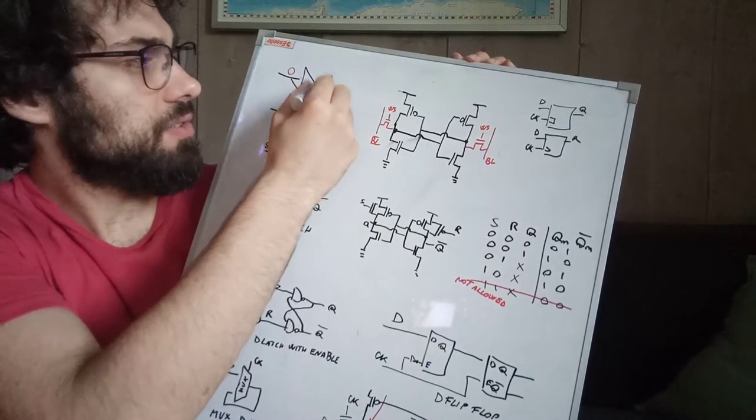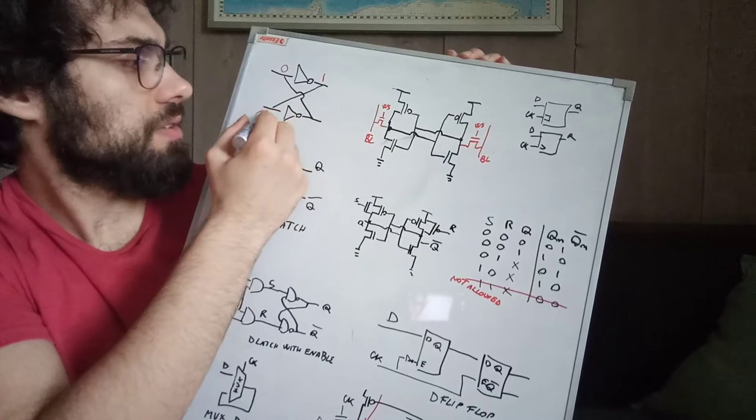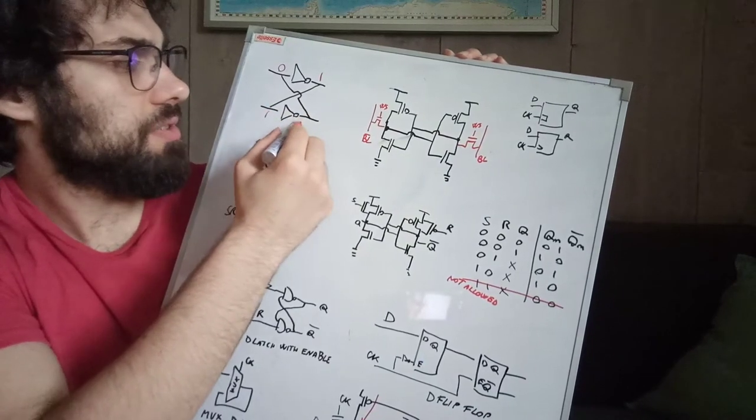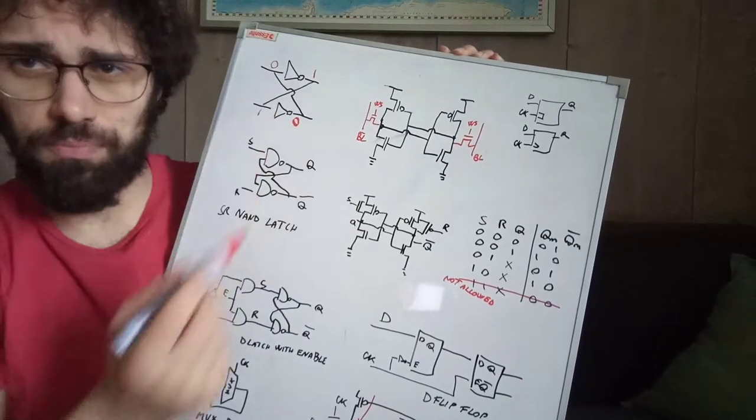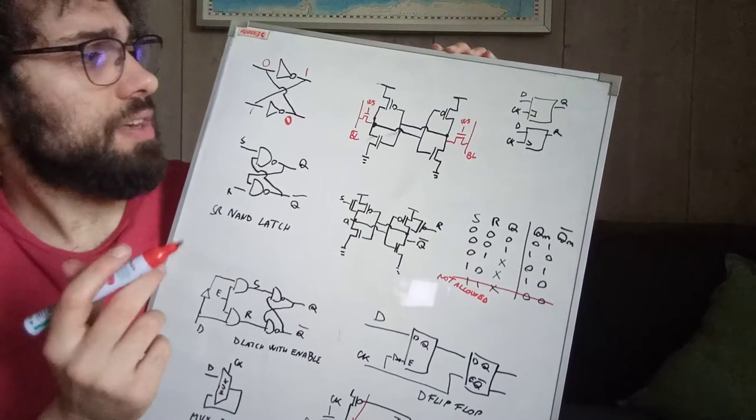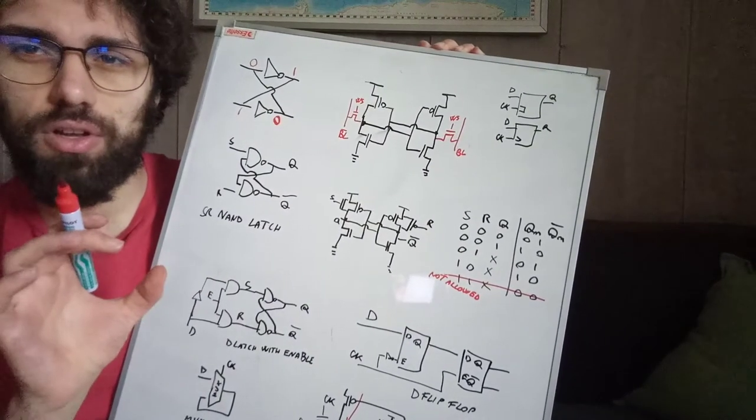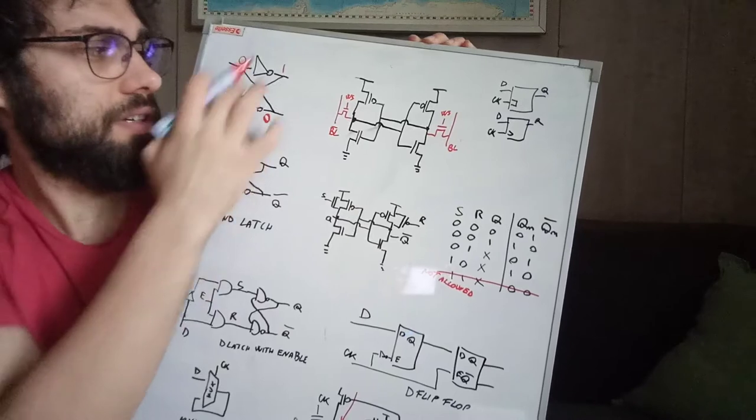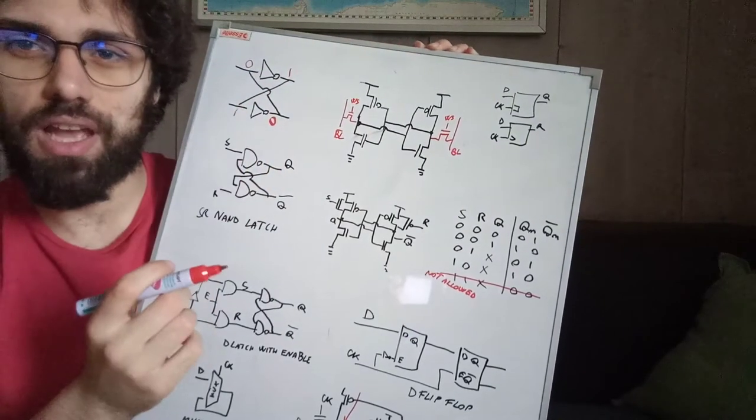As you see, those maintain the state. So the idea is to overpower this basic logic element to just make them switch, and then they will retain the value.